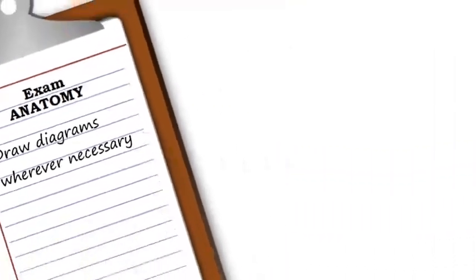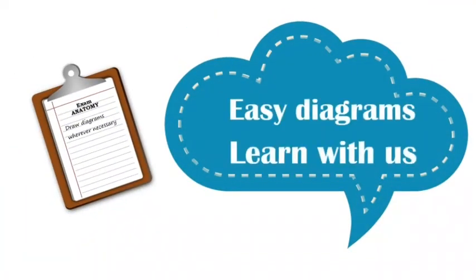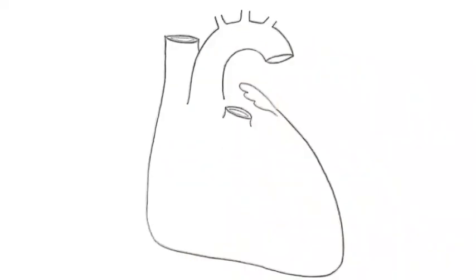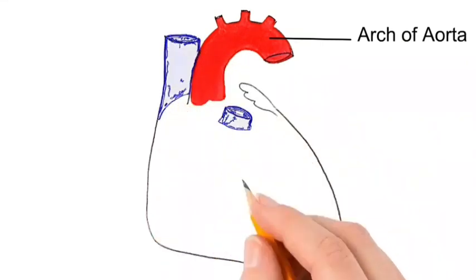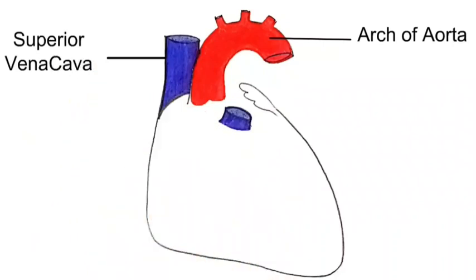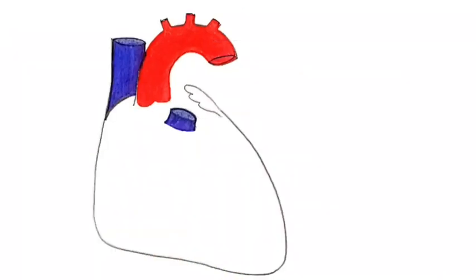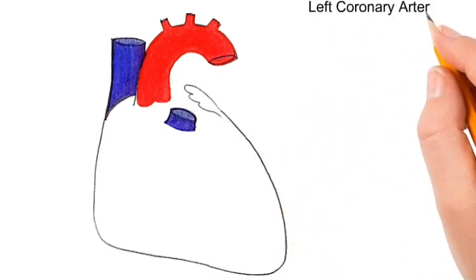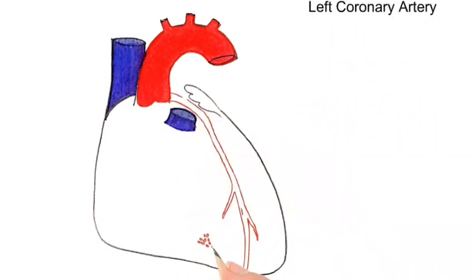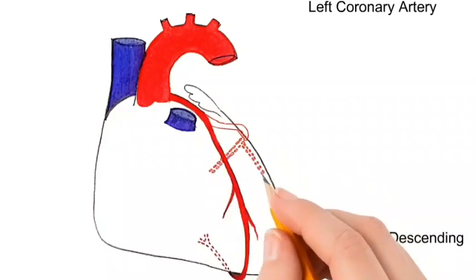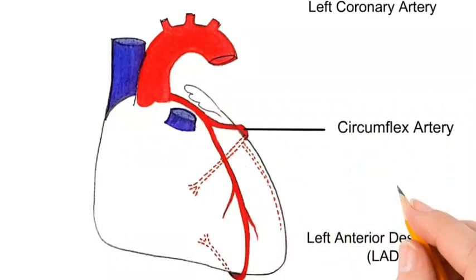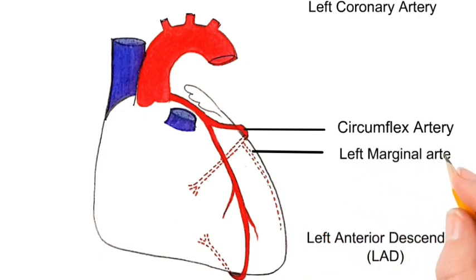For anatomy exams, the diagram of the coronary arteries is very important. We shall now learn an easy method to draw the coronary arteries. First, we draw the outline of the heart showing the important blood vessels: the arch of aorta is shown in red as it is an artery, the superior vena cava and the pulmonary trunk in blue as they are veins. We then draw the left coronary artery arising from the aortic sinus and its branches: the left anterior descending artery, the circumflex artery, and the left marginal artery.